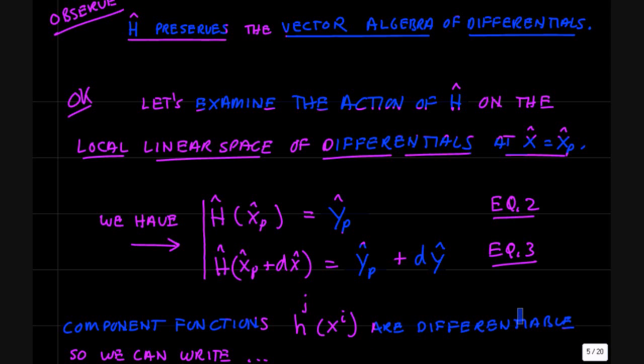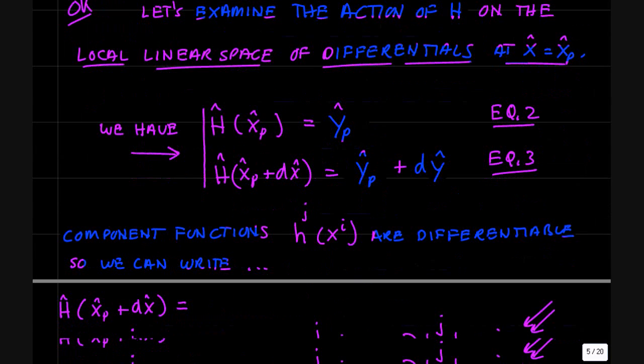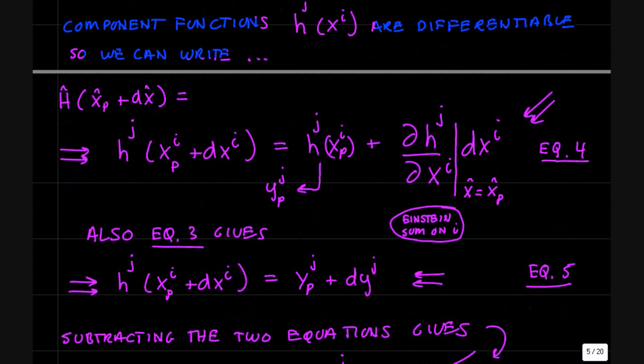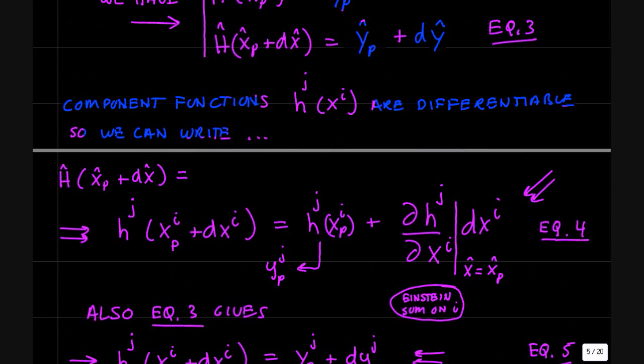We observe that the component functions of h, the h_j's, are differentiable. And so when we write out these equations in terms of the h_j's, you get something very useful. So we have equation three here, the value of h at the point x_p plus dx.